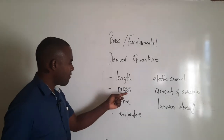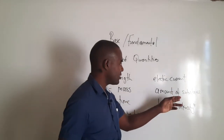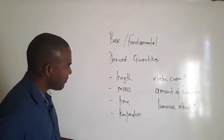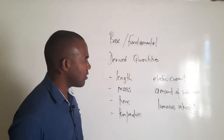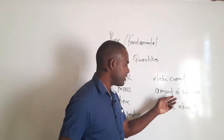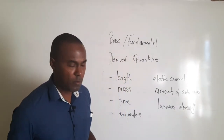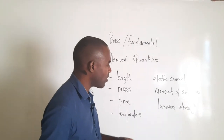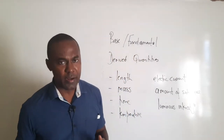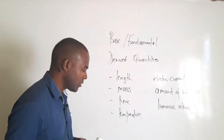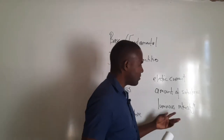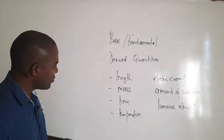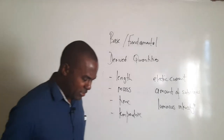The seven base or fundamental quantities are length, mass, time, temperature, electric current, amount of substance, and luminous intensity. We generally encounter the first five quite often, depending on the area of physics or science you're studying. For those who do chemistry, you'll be very familiar with amount of substance — the SI unit is the mole. Luminous intensity you may never encounter unless you do physics to a much higher level.